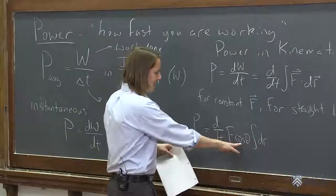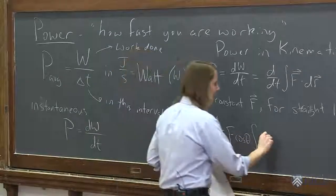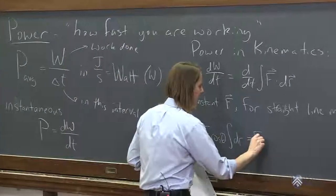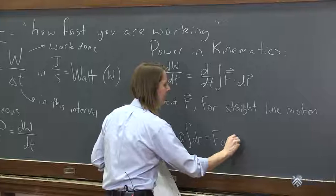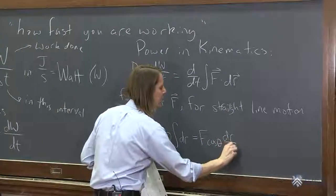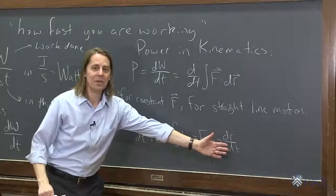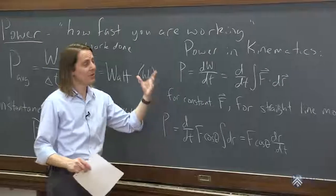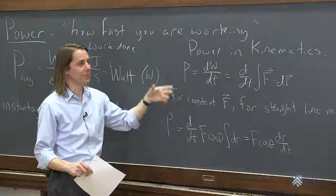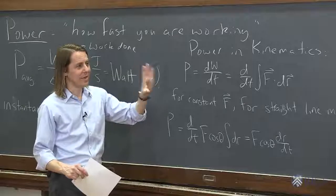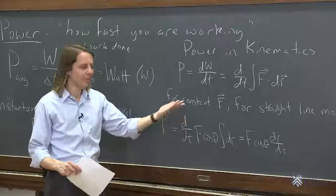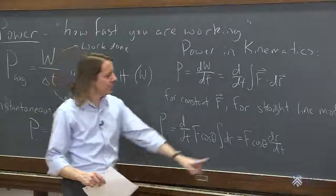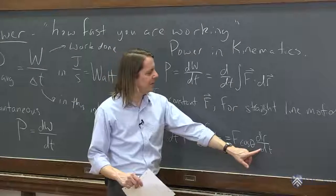So then you could say, well, these are constant, they can come out of the d/dt. So it would be f cosine theta dr/dt, but that's just the velocity. This is a very long way of saying if work is f dot d and you take the time derivative and the force is constant, it's the time derivative of the position, or of the displacement, which is, as you know, the velocity.